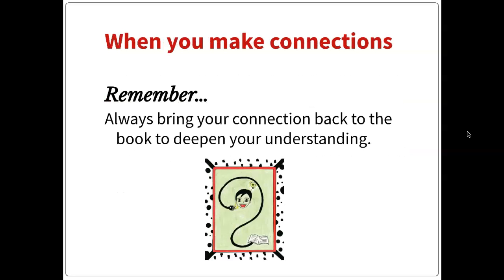When you make connections, make sure the connection is actually helping you deepen your understanding. A weak connection is like saying, 'This is about cats and I know what a cat is.' Obviously you know what a cat is. It has to be something where your knowledge really helps you understand the text more deeply. You have to think about your background knowledge when you're reading.